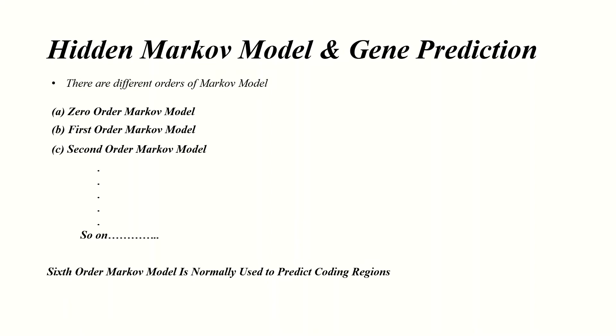In the first order Markov model, the probability of an event depends upon the previous event. In the second order Markov model it depends upon the two previous events. The same is true for higher order Markov models.